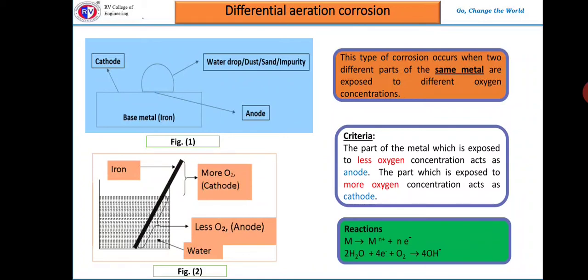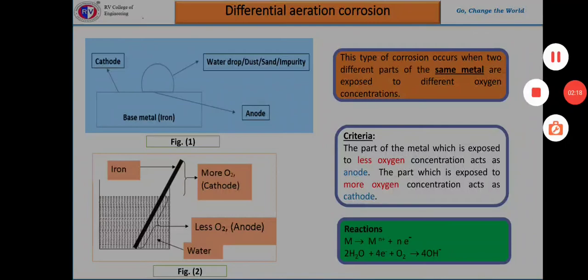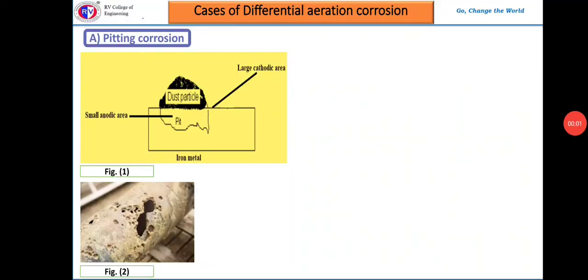Some common examples of differential aeration corrosion are: a part of a nail inside a wall being exposed to lower oxygen concentration than the exposed parts, which undergoes corrosion; window rods inside the frame suffering more corrosion than the exposed region; and a partially buried pipeline in soil or submerged in water undergoes corrosion below the soil.